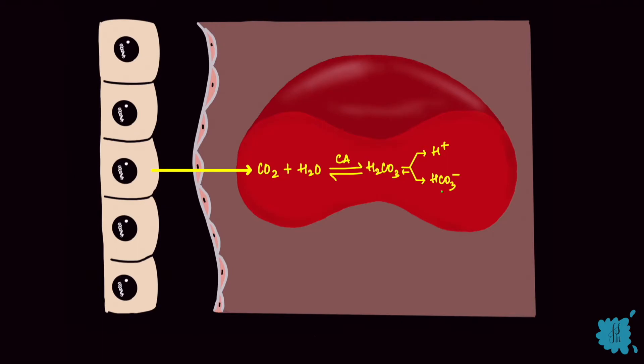The bicarbonate leaves the RBC. To maintain ionic balance, a negative ion enters. That's chloride. This is by the anion exchange protein, that's the band three protein. And this is the chloride bicarbonate exchange, also called a chloride shift.